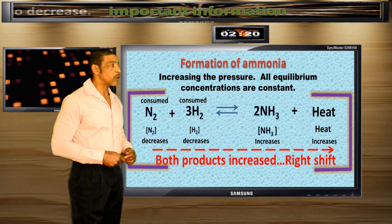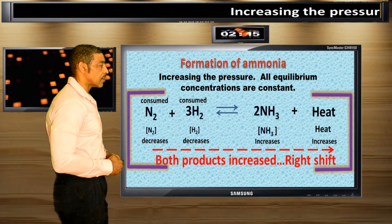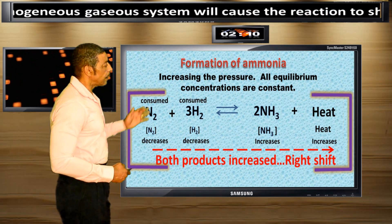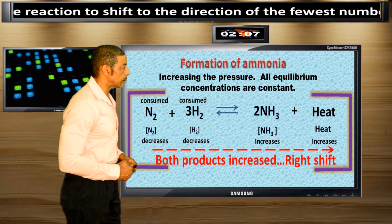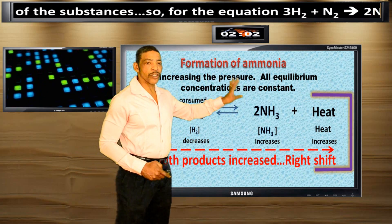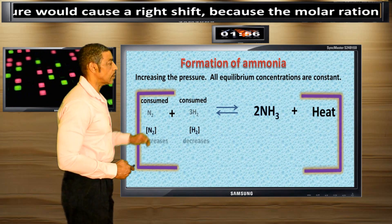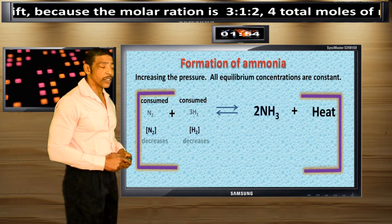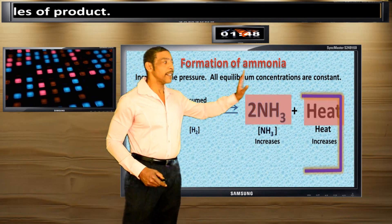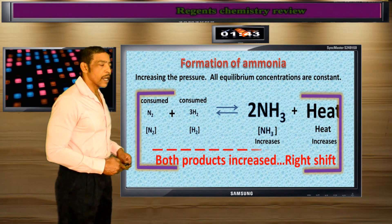Increasing the pressure while holding all concentrations of the reacting species constant. Increasing the pressure will favor the side of the reaction that has the fewest number of moles. Therefore, the forward reaction will be favored since there are 4 moles of reactants and only 2 moles of products. So increasing the pressure will consume N2 and H2, causing their concentrations to decrease, while the concentration of the products — ammonia gas and heat energy — will increase. This results in a right shift.